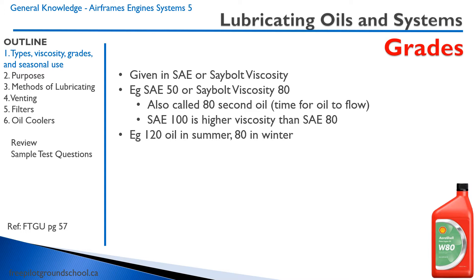When we talk about grades of oils, it's given an SAE or Saybolt viscosity. So let's say SAE 50 or Saybolt viscosity 80 — this is called the 80-second oil, referring to the time for the oil to flow. SAE 100 is a higher viscosity than SAE 80. As an example of common grades, we might use SAE 120 oil in the summer, which is considerably thicker, and SAE 80-weight oil in the winter, which is thinner and flows more easily.